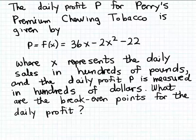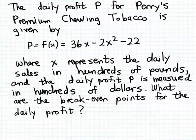The break-even points for the profit are going to be the sales amounts that will cause Perry to break even — in other words, the sales amounts that will not result in a loss but also not result in a profit. Break-even sales amounts correspond to a profit of exactly zero: not a positive profit, but not a negative profit, which would be a loss.